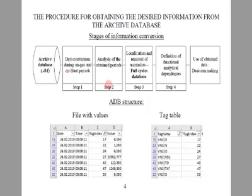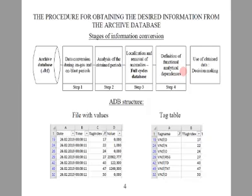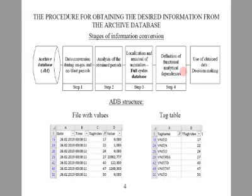Now let's turn to slide number 4. The authors propose the following stages of information conversion: Step 1 — data conversion during on-gas and on-blast periods; Step 2 — analysis of the obtained periods; Step 3 — localization and removal of anomalies, yielding a full cycles database; Step 4 — definition of functional analytical dependence. At one of the iron and steel plants of Ukraine, the values of 194 technological parameters of HBSB in ACS for cast iron smelting are recorded in ADB with a frequency of 5 seconds, and a file is generated every 24 hours — accordingly, one file contains more than 3 million records.